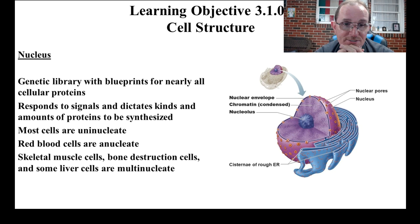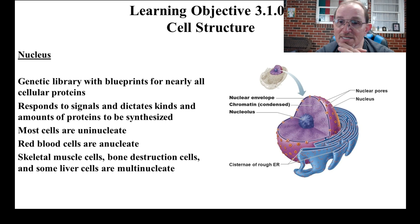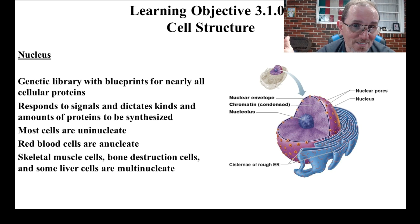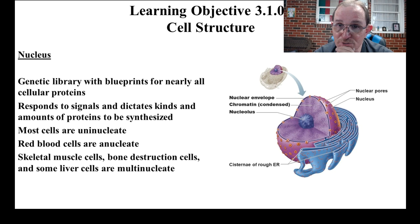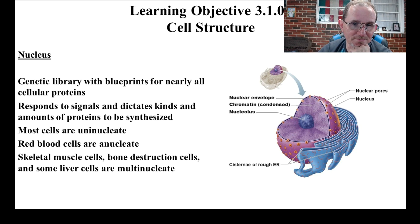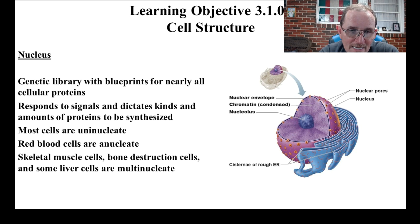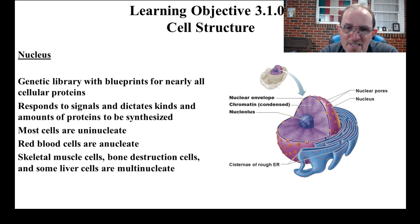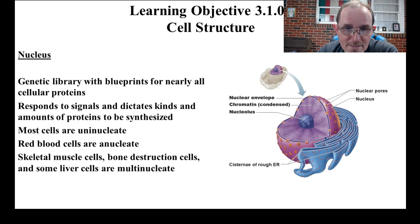Most cells only have one nucleus, but there are some exceptions. Your red blood cells have no nucleus — the red cell is basically just a lipid bilayer, a bag of hemoglobin. The cells on the outer layer of your skin are filled with keratin and have no nuclei; they're not really what you would call alive. The skeletal muscle cells, the cells that break down bone, and some liver cells have more than one nucleus. There are also some disease conditions that will cause you to have multiple nuclei.